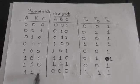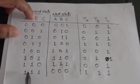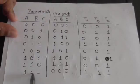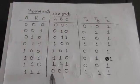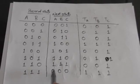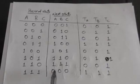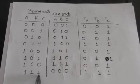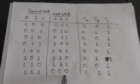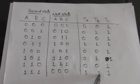Now consider the row where the present output is 1 1 1. The present values of flip-flops A, B, and C are all 1, but we want the next output of the binary counter to be 0 0 0. So the next outputs of all three flip-flops A, B, and C should be 0 0 0.